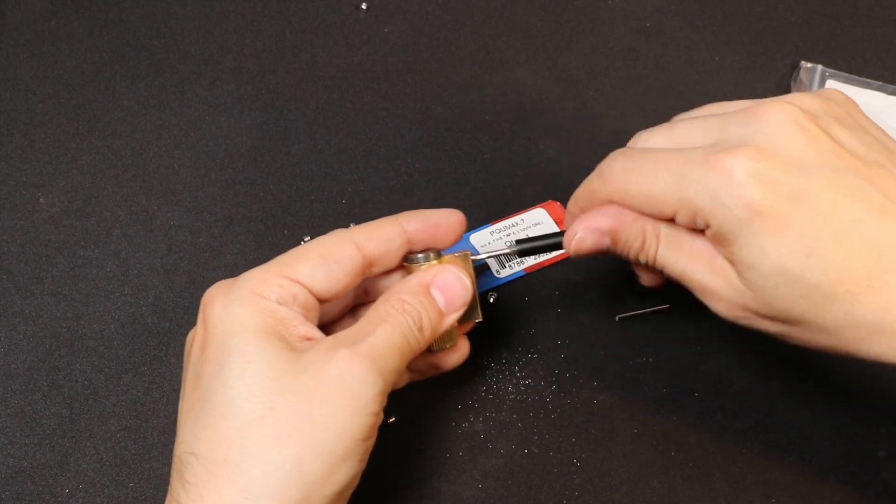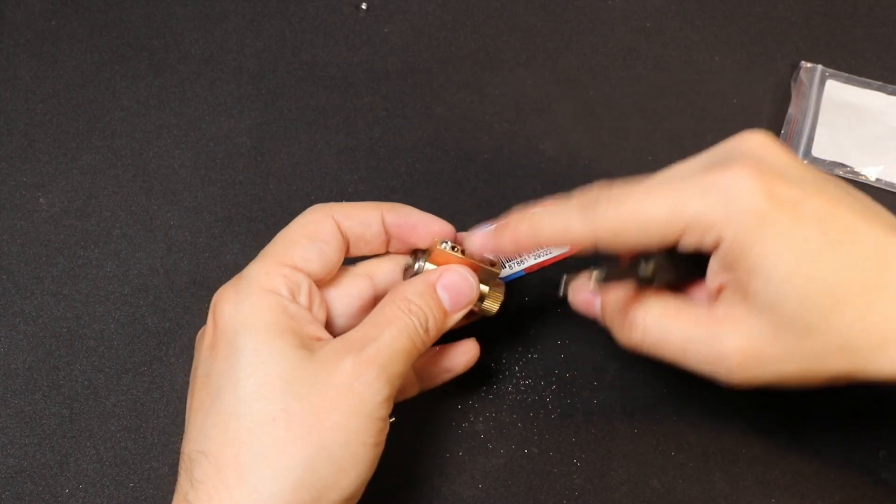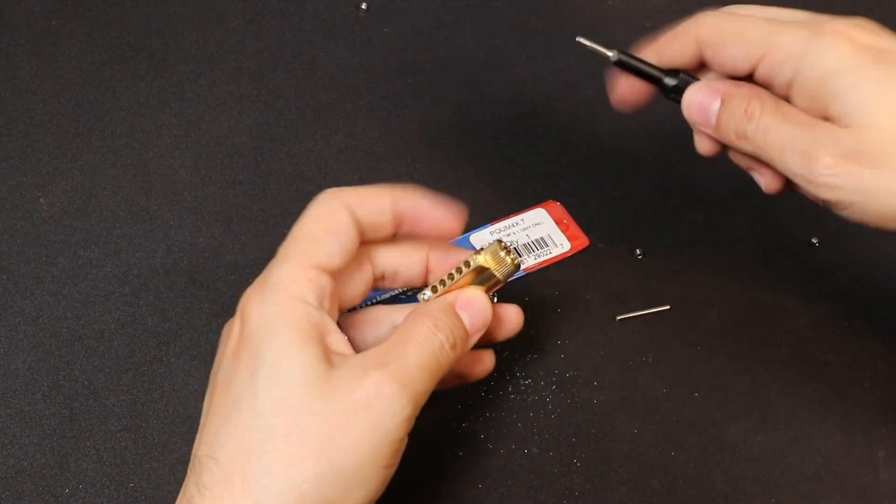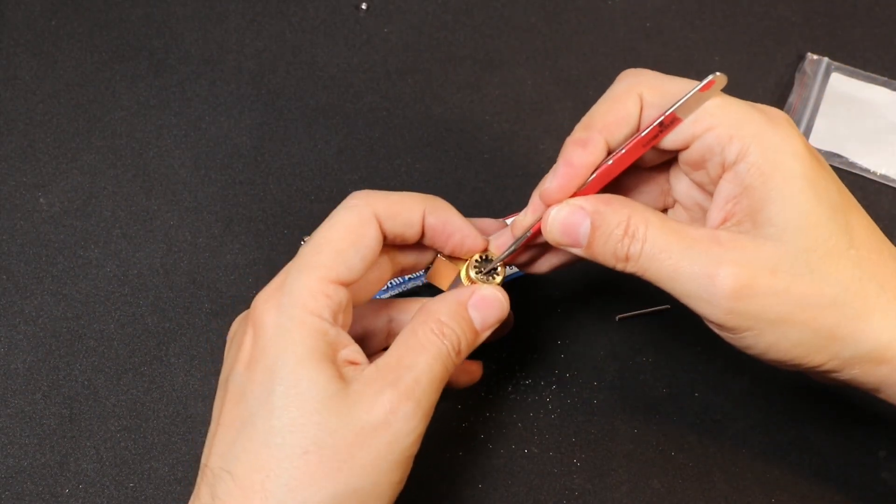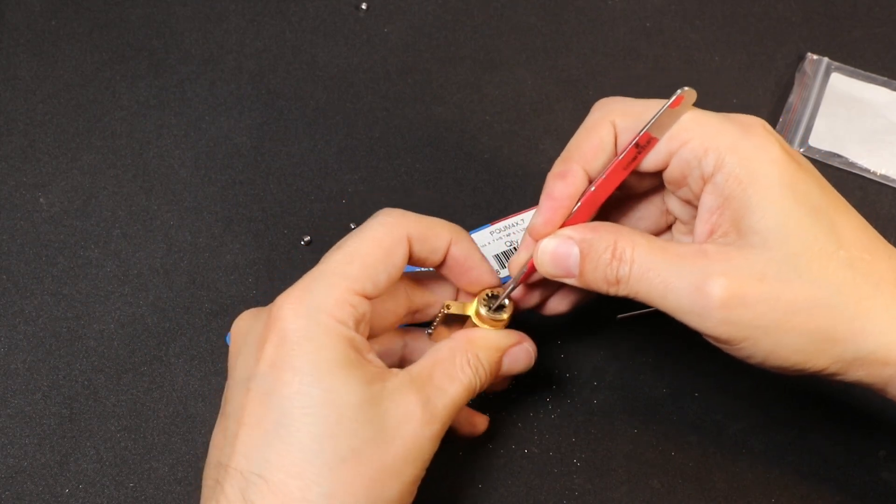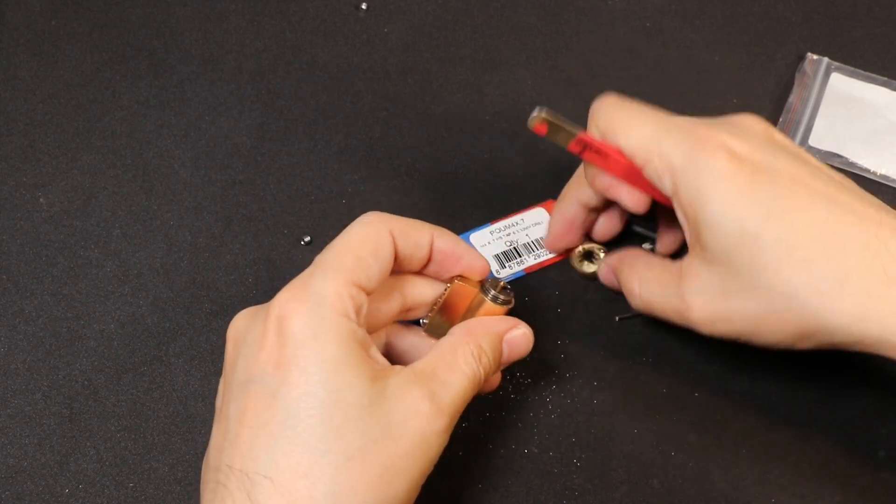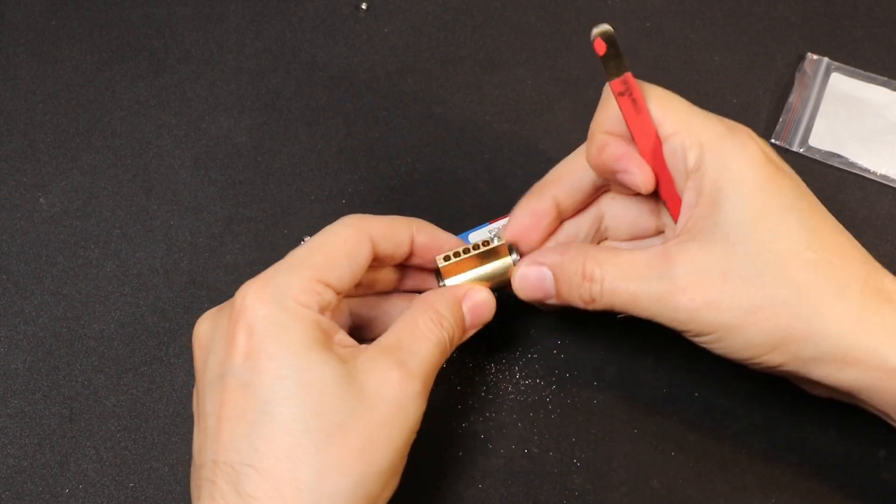You might want to do this with everything removed. In this particular one, what we're gonna do is push down on this pin here, and it allows you to unscrew this cap. Then once that's gone, we can take out the plug.